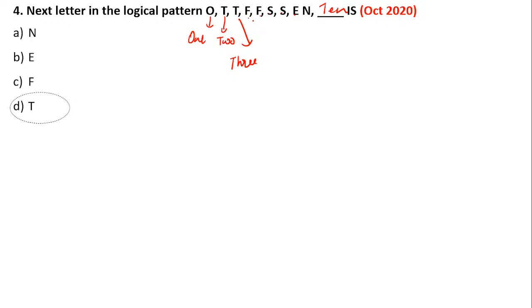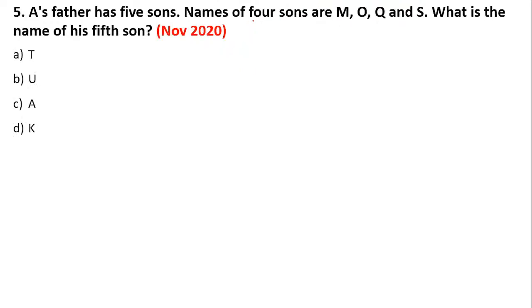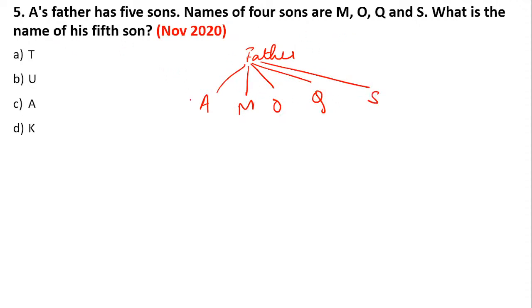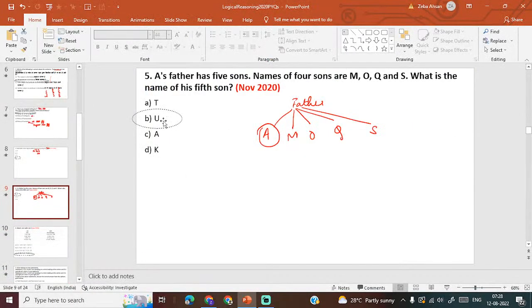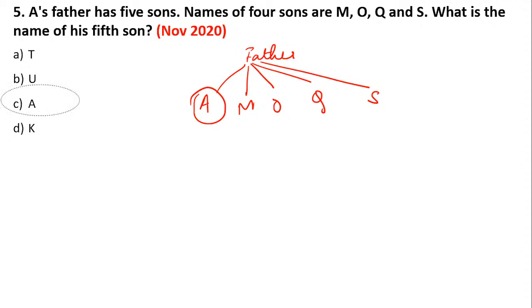There are so many students live but I am confused about why you don't answer in the comment section. Students, answering is very important — it shows your understanding of the topic. You must answer. Next: A's father has 5 sons. Names of 4 sons are M, O, Q, S. What is the name of the 5th son? A is a person and his father has 5 sons.